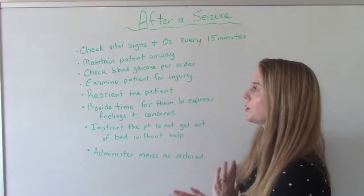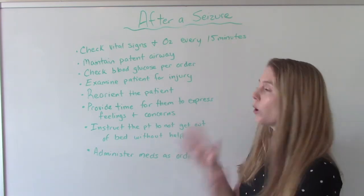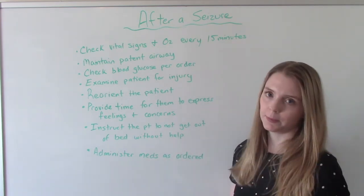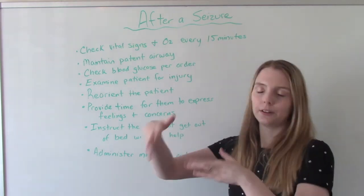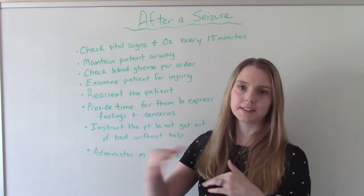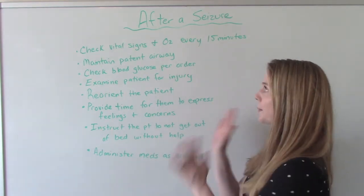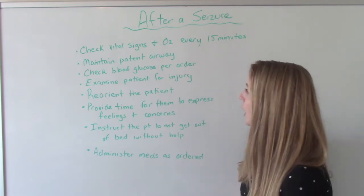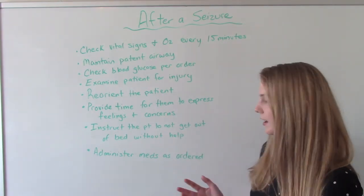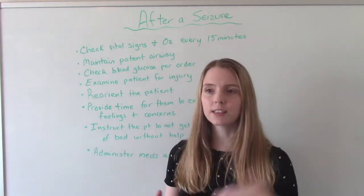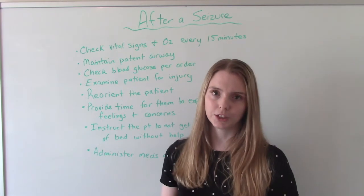After the seizure is over, we're going to do frequent vitals including O2 saturation every 15 minutes, at least in that initial period — then it will get spaced out. Of course we want to make sure our patient has a patent airway. Sometimes the doctor will order a blood sugar check, though this is not a standard order — some will order it and some will not, depending on what they think is going on with the patient.